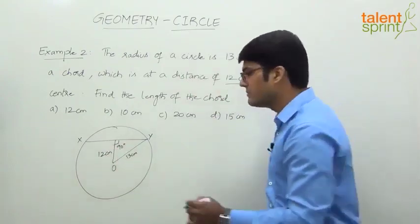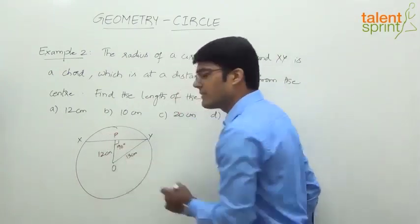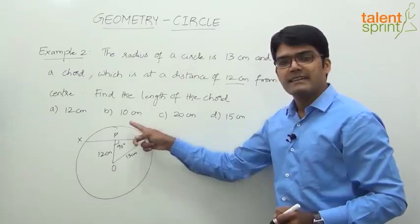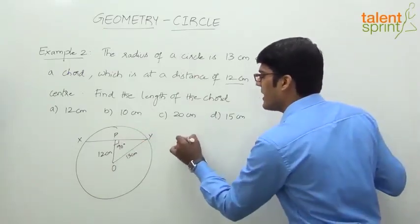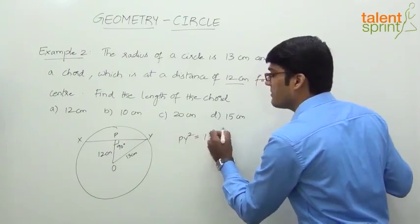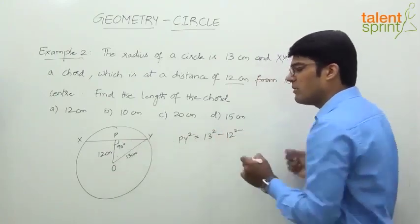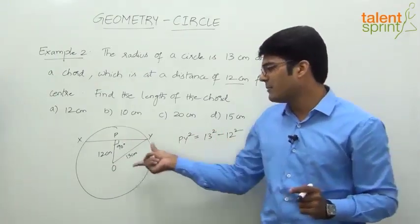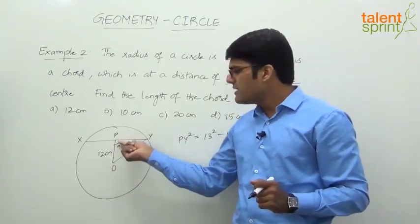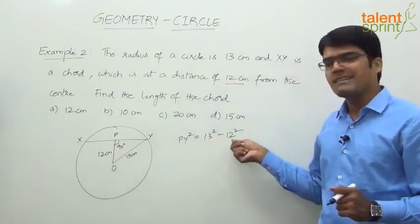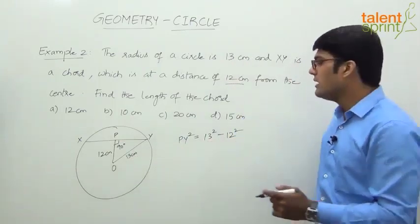And like you all know, this is going to be a right angle triangle, so we can apply Pythagorean theorem. Let's say this point here is P. So OPY is the right angle triangle. Can we get the length PY? Yes, we can say PY squared equals to 13 squared minus 12 squared. I'm not writing all the detailed Pythagorean theorem there.